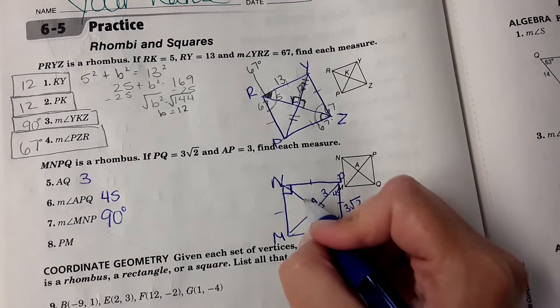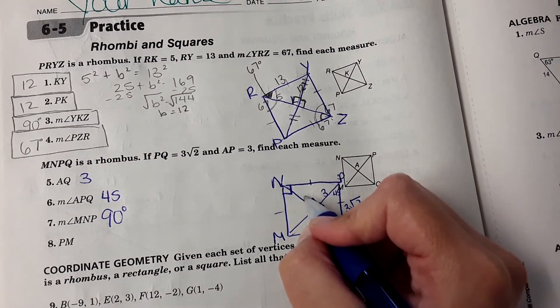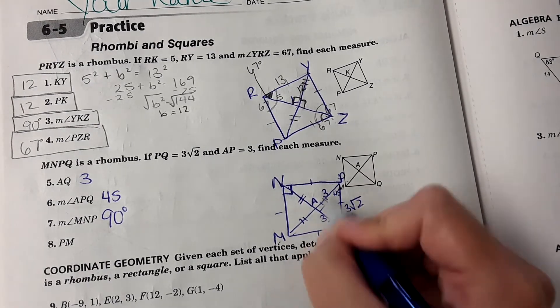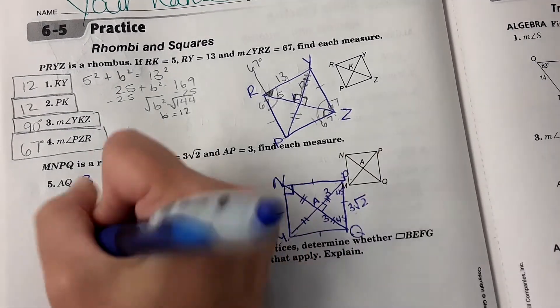And then PM, this whole distance. Well, if it's a square, it follows the same rules as a rectangle. So all of these are the same measure. So PM, that entire length, would be 3 plus 3, which is 6 units.